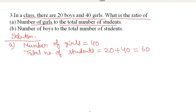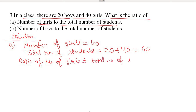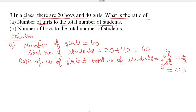The ratio of number of girls to total number of students equals 40 upon 60. Simplifying by canceling — 40 upon 60 gives 2 upon 3. So the ratio is 2 : 3.